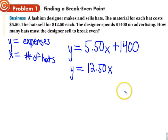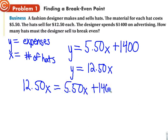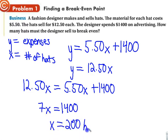Remember we have three ways: graphing, substitution, and elimination. This one makes sense to use substitution. I'm going to take 12.5x and replace it with y. So I subtract and get 7x equals 1,400. So x equals 200. The designer needs to sell 200 hats to break even.